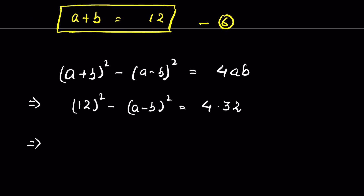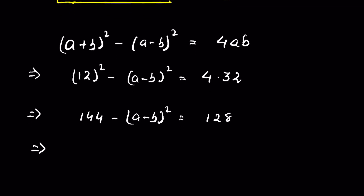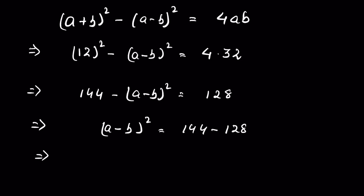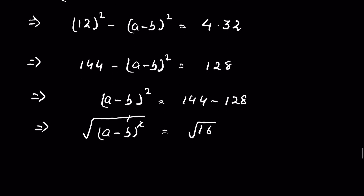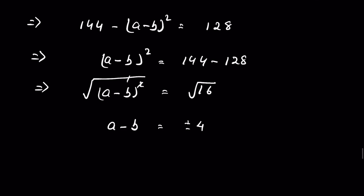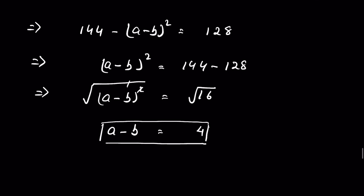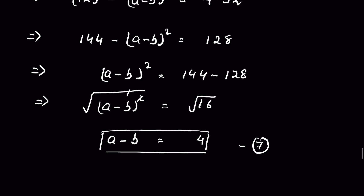So 144 minus (a-b)² equals 128, which gives (a-b)² equals 16. Taking the square root, a-b equals plus or minus 4. Since a and b are positive, we take the positive solution: a-b equals 4. Let this be equation 7.